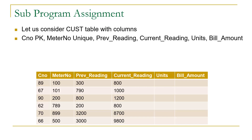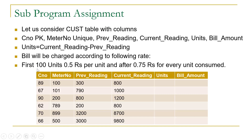This is a database of an electricity department where we can calculate the units by subtracting previous reading from current reading. After finding the number of units consumed, we calculate the bill amount based on these conditions: for the first hundred units the rate is 0.5 rupees per unit, and after the first hundred units, 0.75 rupees is charged for every unit consumed.